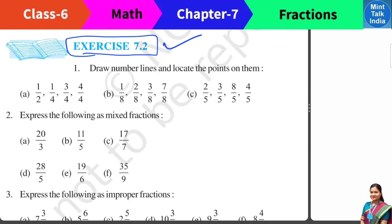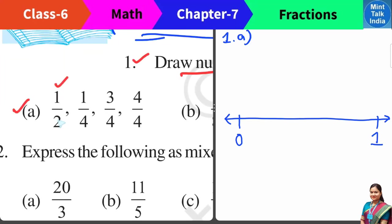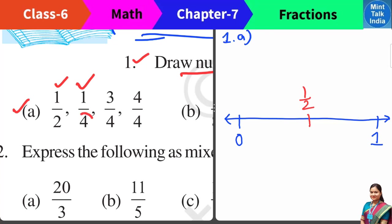Let us now solve Exercise 7.2 questions. Question 1: draw a number line and locate the points on them. First, we need to draw 4 proper fractions: 1 by 2, 1 by 4, 3 by 4, and 4 by 4. The first one is 1 by 2, that is half — half means exactly the midpoint of any portion. Out of total 2 equal parts, we take only 1 part, so that position is the half position. Next, 1 by 4 means out of 4 equal parts — we divide the line into 4 equal parts and take only 1 part, which is 1 by 4th.